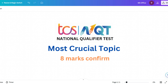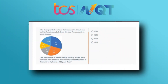Let's start with the first question. The chart given below shows the breakup of mobile phones sold by five stores — A, B, C, D, and E — in May. The values are given in degrees. The pie chart shows: E = 64.8°, A = 108°, B = 90°, C = 54°, D = 43.2°. The total number of phones sold by E in May is 4500.